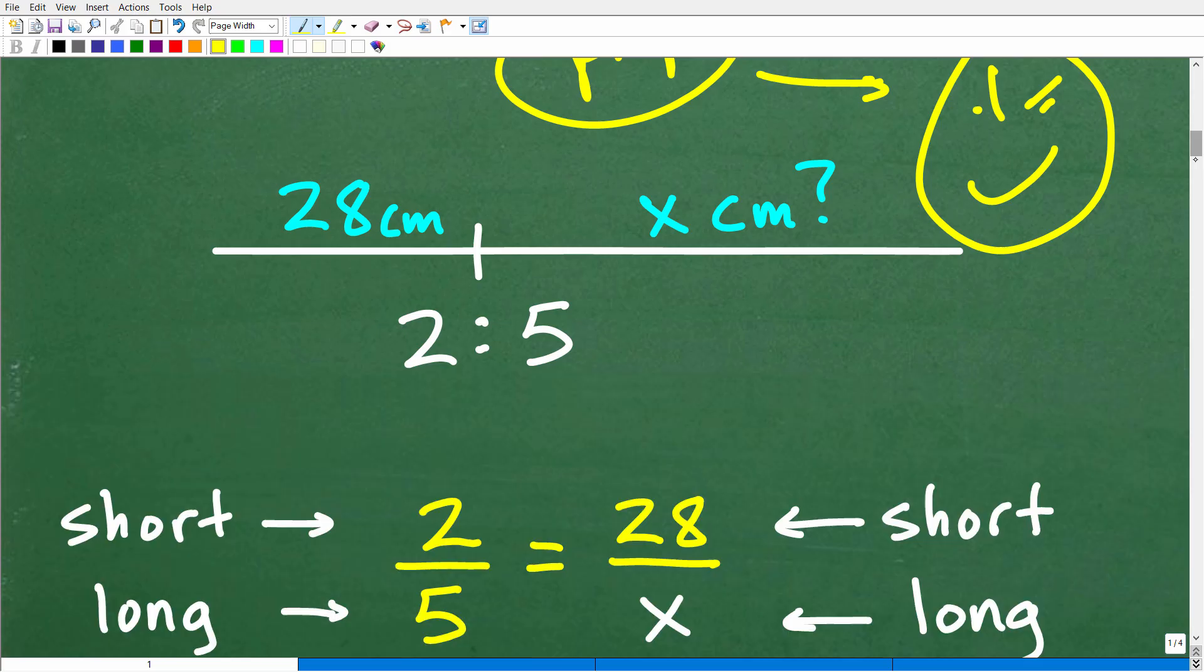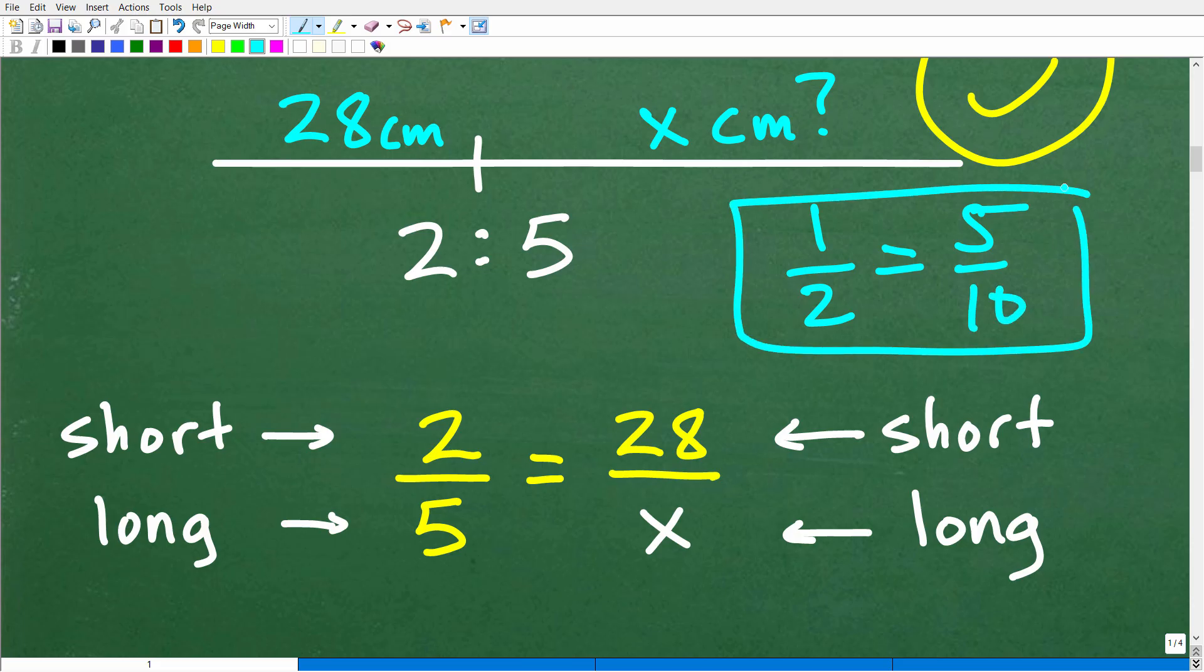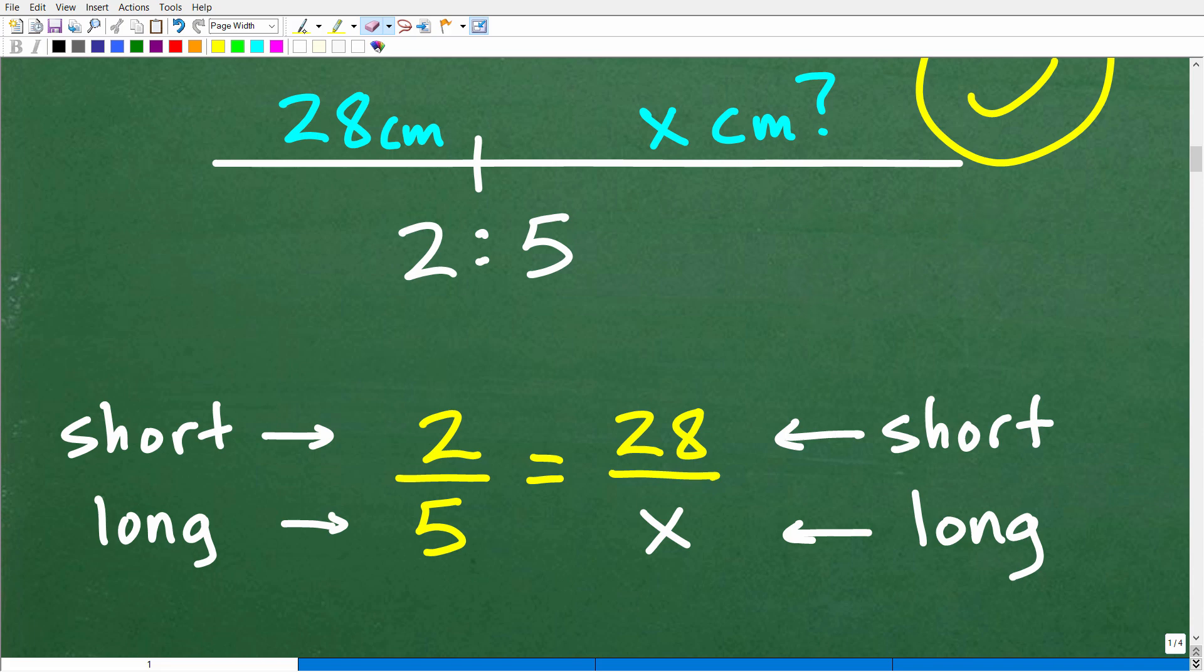Okay, so a proportion is nothing more than two equal fractions. So for example, if I had a fraction one half, and let's just think of another fraction that's equal to one half, how about like say 5 over 10. So this is a proportion. So it's nothing more than two equal fractions. And when you have two equal fractions, we have something called the cross product. And that means if you cross multiply like this, one times 10 is 10 and two times 5 is 10 as well. So when you have two equal fractions, i.e. a proportion, the cross product is true. And we need to understand this property of proportions to solve proportion problems.